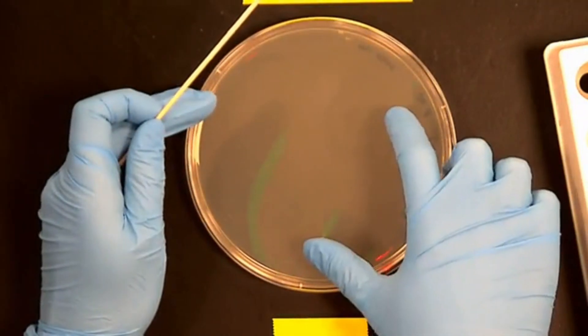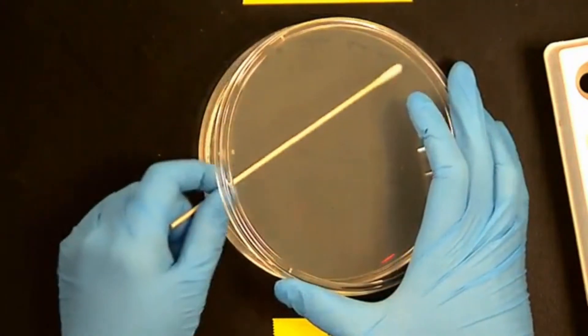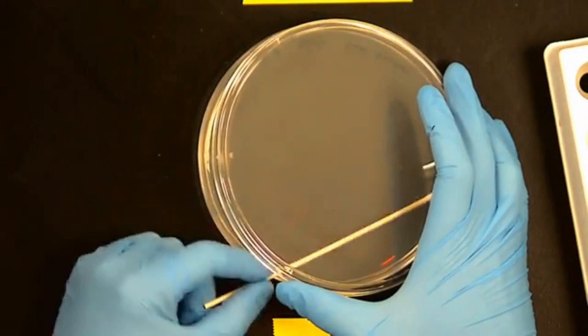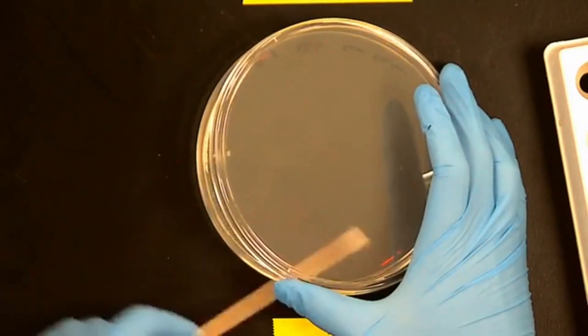Then you're going to rotate the plate between 60 and 90 degrees, and you're going to repeat that process. Don't get any more bacteria. You're just going to swab from one side to the other again using tight strokes, rotating the swab.